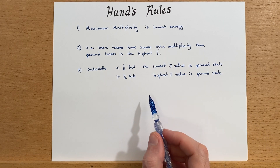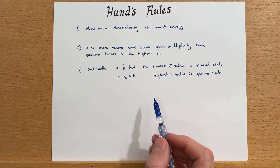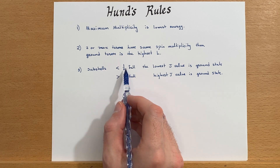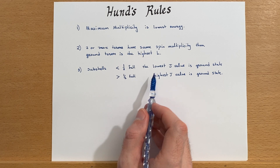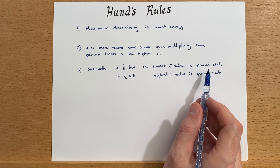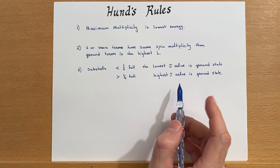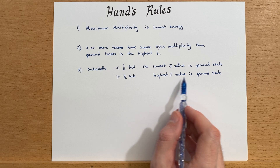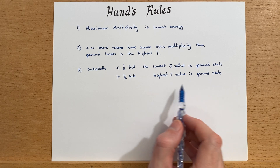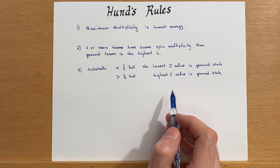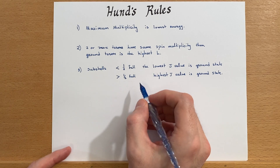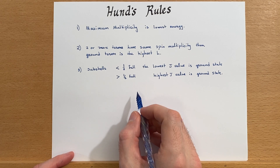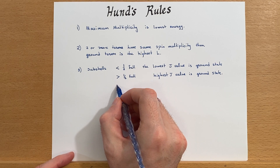Next you look at the J values. If the subshell is less than half full, then the lowest J value is the ground state. If it is more than half full, then the highest J value is the ground state. And if it is exactly half full, then there will only be one J value for that particular state.